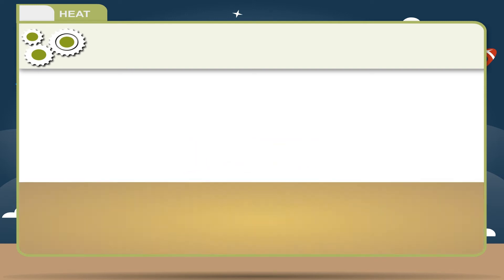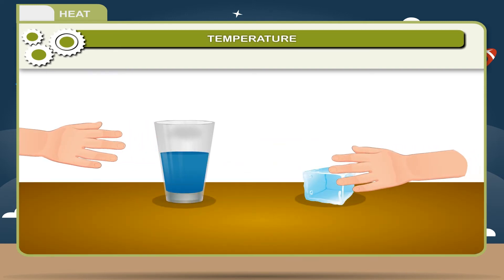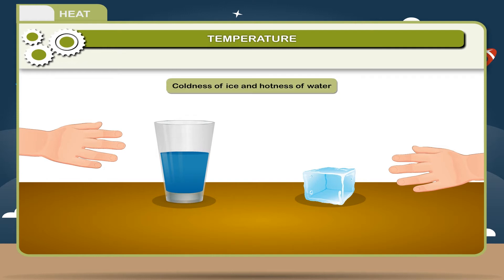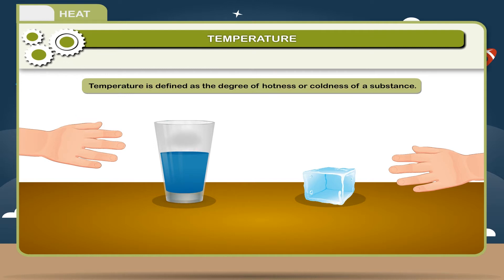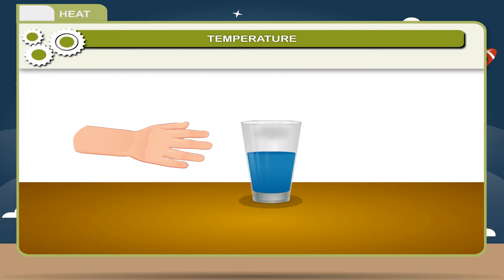Temperature: When we touch hot water and ice, we feel coldness of ice and hotness of water. Temperature is defined as the degree of hotness or coldness of a substance. When two bodies are at different temperatures...